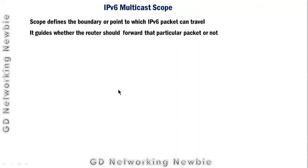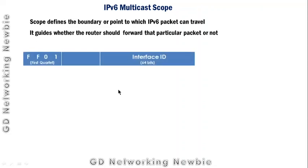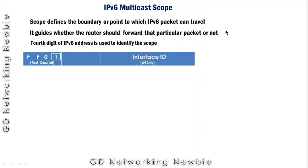When the router receives a packet, it looks at the IPv6 address and decides whether to forward that packet. This is dictated by the multicast scope. You can recognize a multicast address by 'FF' at the start. The fourth digit in the IPv6 multicast address is what identifies the scope — we need to focus on that fourth hexadecimal digit.